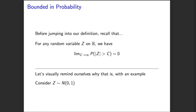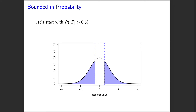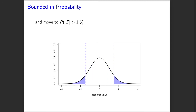Let's visually remind ourselves what is going on with this statement and look at an example. We're going to look at a normal random variable with mean zero and variance one, looking at its density. We could imagine plugging in 0.5 for c — the probability that z in absolute value exceeds 0.5 is shown in that blue shaded region, and there's actually a lot of probability there. Moving to c of 1.5, we see a much smaller probability that z exceeds that in absolute value, but still an appreciable amount.